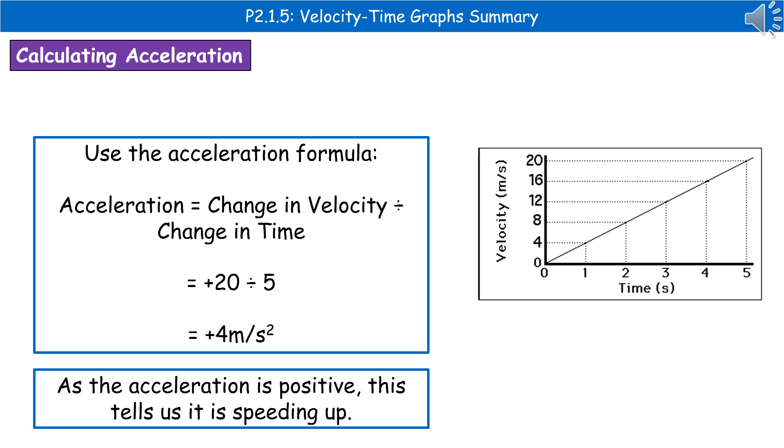We then use the acceleration formula to substitute in those values. Change in velocity divided by change in time is 20 divided by 5, which gives us an acceleration of +4 meters per second squared. Because that acceleration is positive, this tells us the object is speeding up.